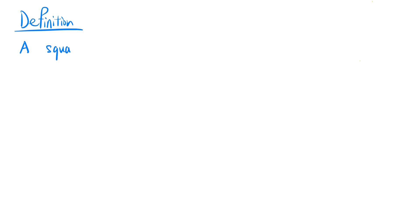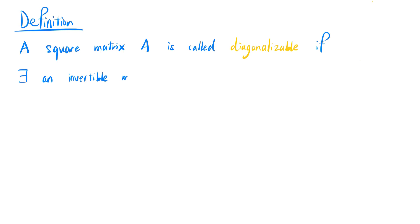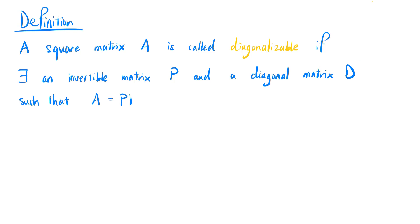First, let's define diagonalization. A square matrix A is called diagonalizable if there exists an invertible matrix P and a diagonal matrix D such that A equals P times D times P inverse.